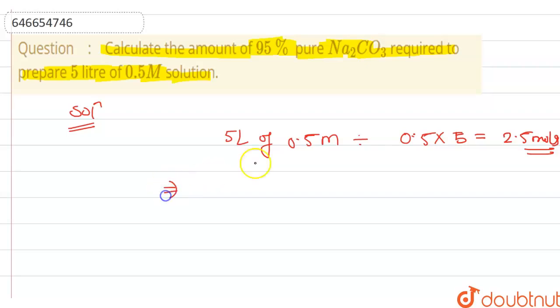Now, Na2CO3 has a molar mass of 106 grams. So according to that, mass of number of moles...